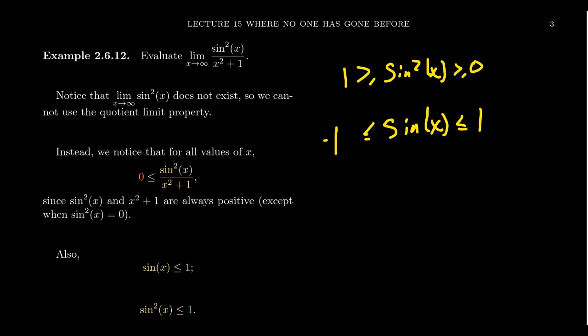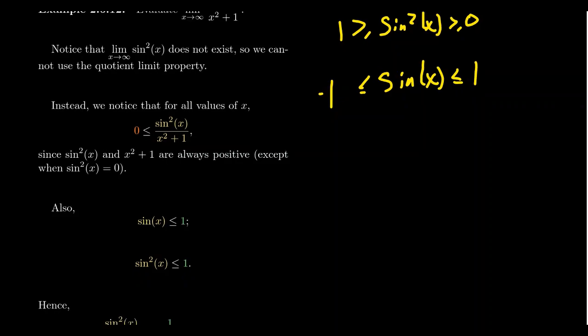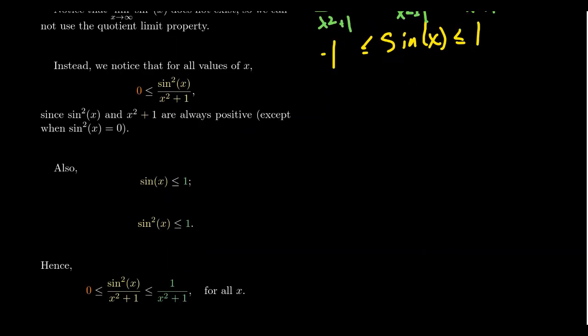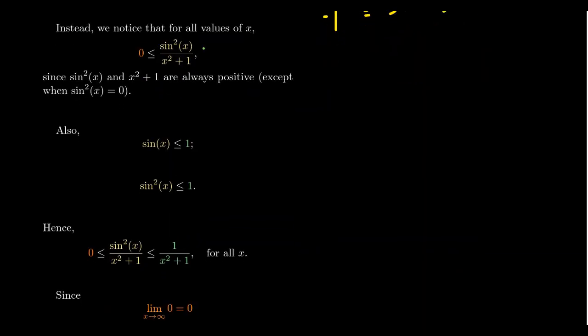And then likewise, if you divide this expression by x squared plus 1, notice 0 divided by x squared plus 1 will still be 0. You also get a 1 over x squared plus 1. X squared is non-negative. If you add 1 to it, it's definitely positive. And so when you divide these inequalities by positive, it won't change the direction whatsoever. So sine squared over x squared plus 1 is going to be greater than or equal to 0. Since sine is less than or equal to 1, sine squared is less than or equal to 1. And finally, if you divide everything by x squared plus 1, you get these inequalities.